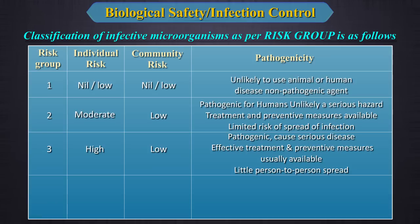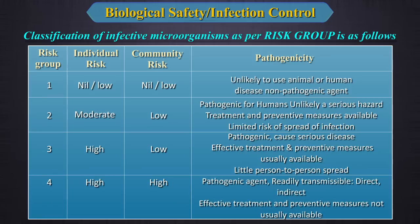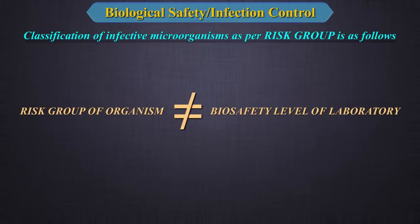Risk Group 4 means both individual and community risks are high. The pathogenicity indicates a lethal pathogenic agent that is readily transmissible — directly or indirectly infective — and effective treatment and preventive measures are not usually available. Note that the risk group does not equate to the biosafety level of the laboratory.